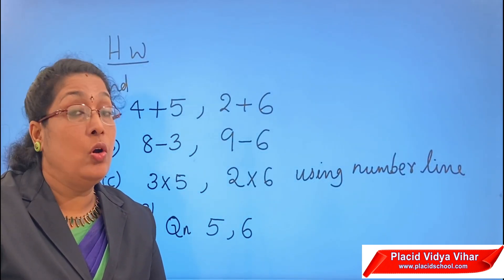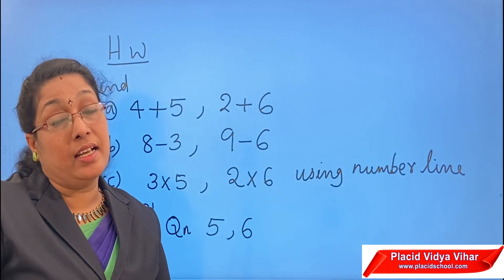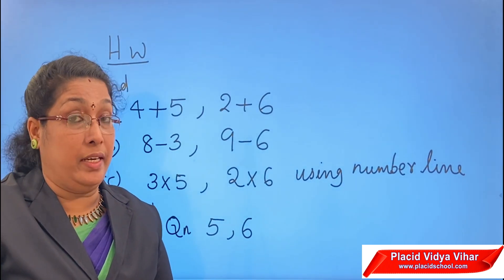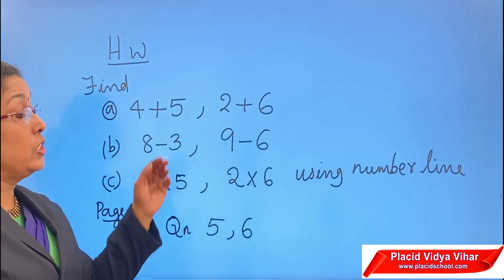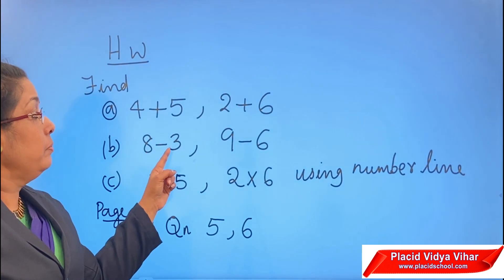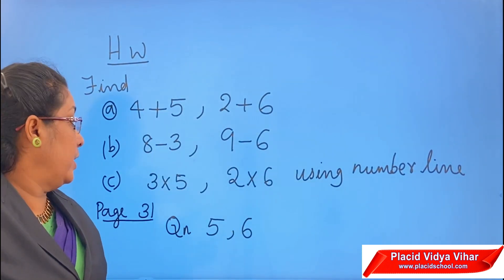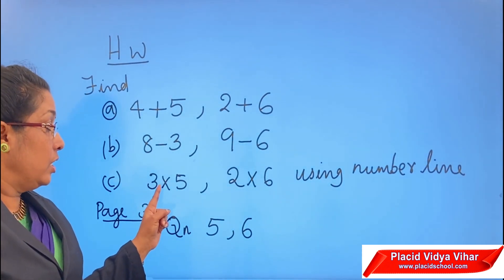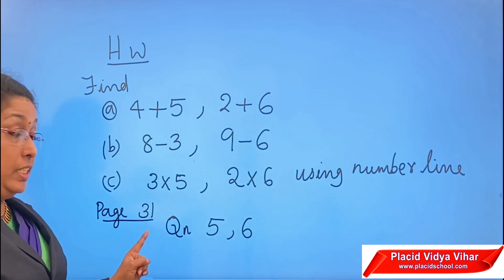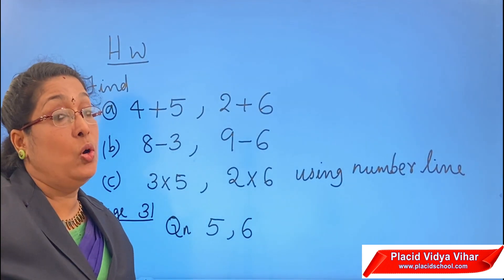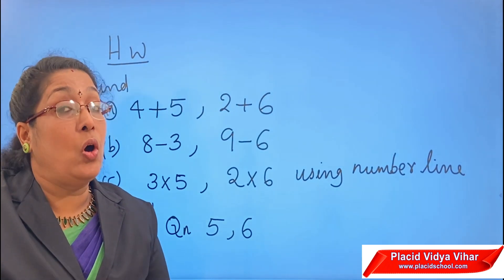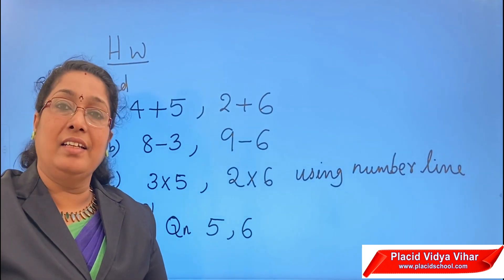Today we have discussed whole numbers, predecessor and successor, and how to do addition, subtraction, and multiplication of whole numbers on the number line. Here is the homework: find 4 plus 5 and 2 plus 6 using the number line; find 8 minus 3 and 9 minus 6 using the number line; and 3 into 5 and 2 into 6 using the number line. Also, page number 31, question numbers 5 and 6 from your textbook. I will be back with the properties of whole numbers in the next class. Take care, thank you.